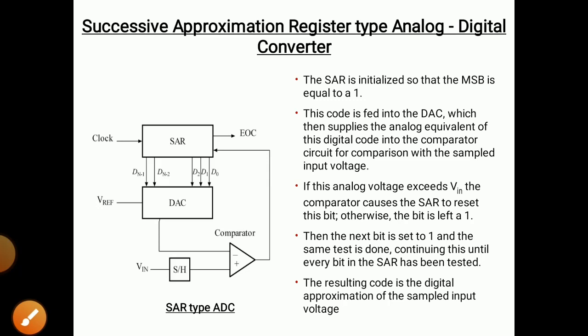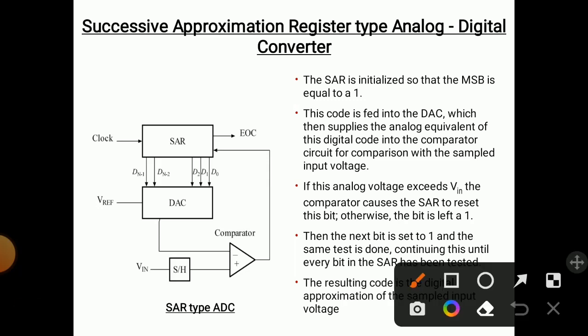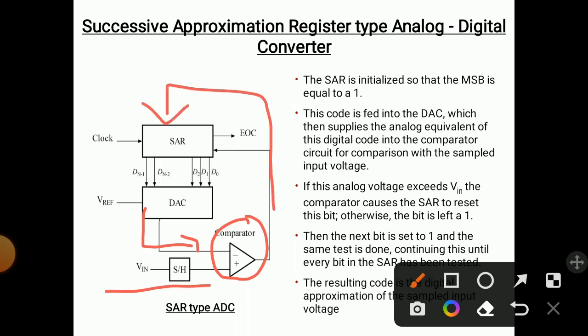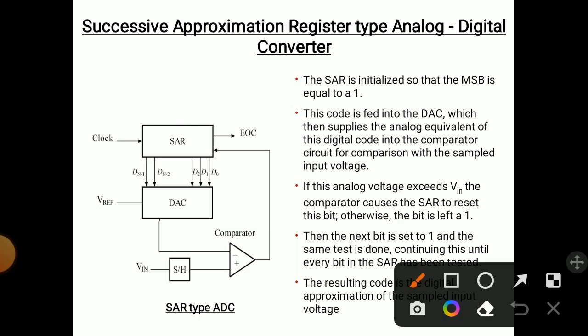There is one famous register called the Successive Approximation Register (SAR), which converts analog form into digital form. It consists of one comparator, which compares two signals: one is the V input signal and one comes from the DAC — the Digital to Analog Converter. The comparator compares these two signals and takes action, which is given to the SAR. The SAR automatically takes actions and gives us the output. The steps are as follows.